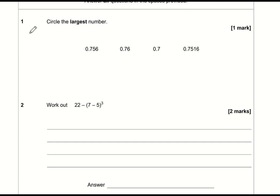What I would suggest doing is write them in a column: 0.756, 0.76, make sure the columns are more or less in line, 0.7, and 0.7516. Because they are of different lengths, the best thing to do is add zeros so they all have the same length. The longest one has four decimal places.